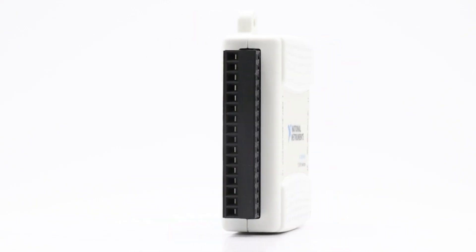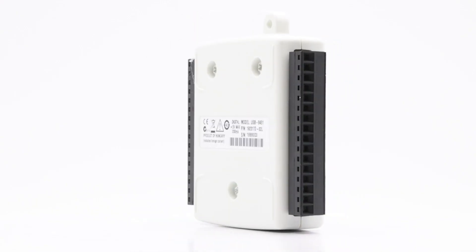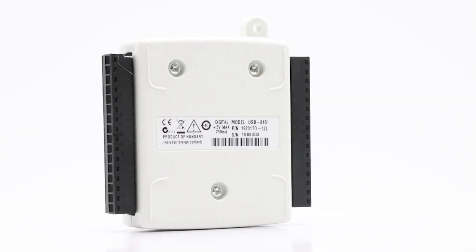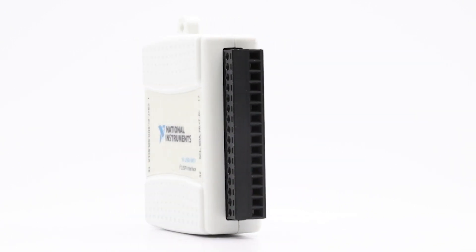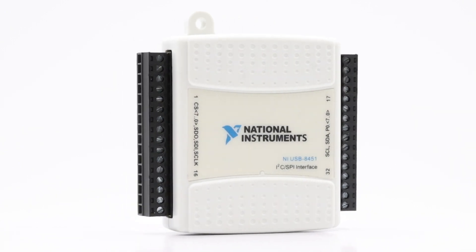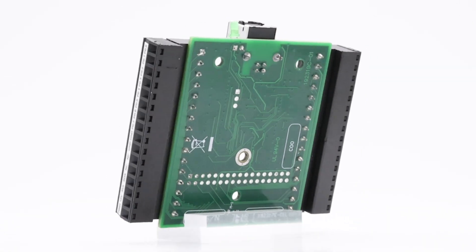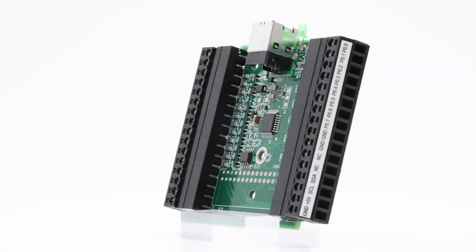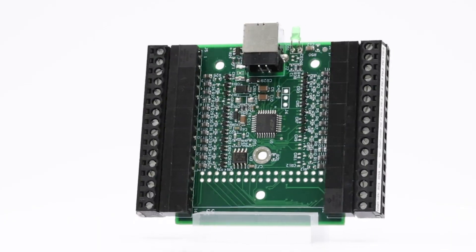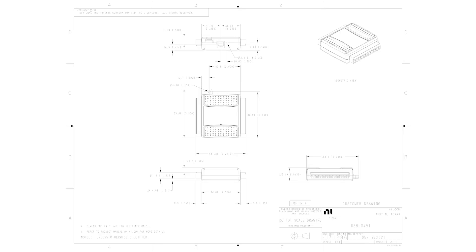The USB 8451 is a bus-powered, full-speed I2C and SPI interface device, and comes in two variations: in an enclosure or as a board-only, known as USB 8451 OEM. This device can be used as a means of connectivity and communication with peripheral interface devices, system management buses, and integrated circuits. It is a portable communication solution to be used with integrated circuits and consumer electronics.